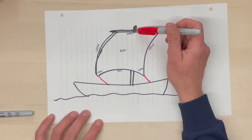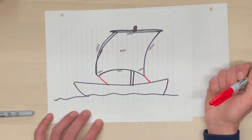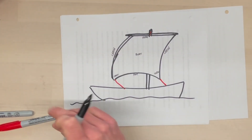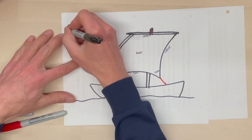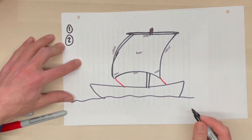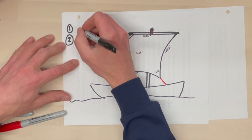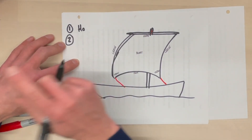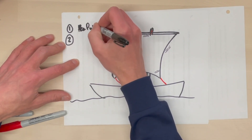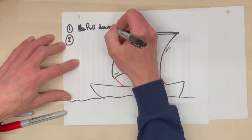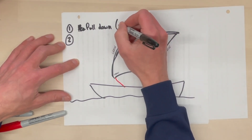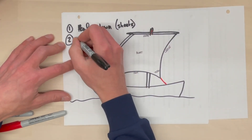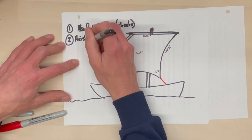The most important lines for the sail are the halyard and the sheets. All of the sails on the James Craig are set the same way, in a two-step process. The first step is pull down — we generally pull down with the sheets. The second step is hoist — and that is done with the halyard.